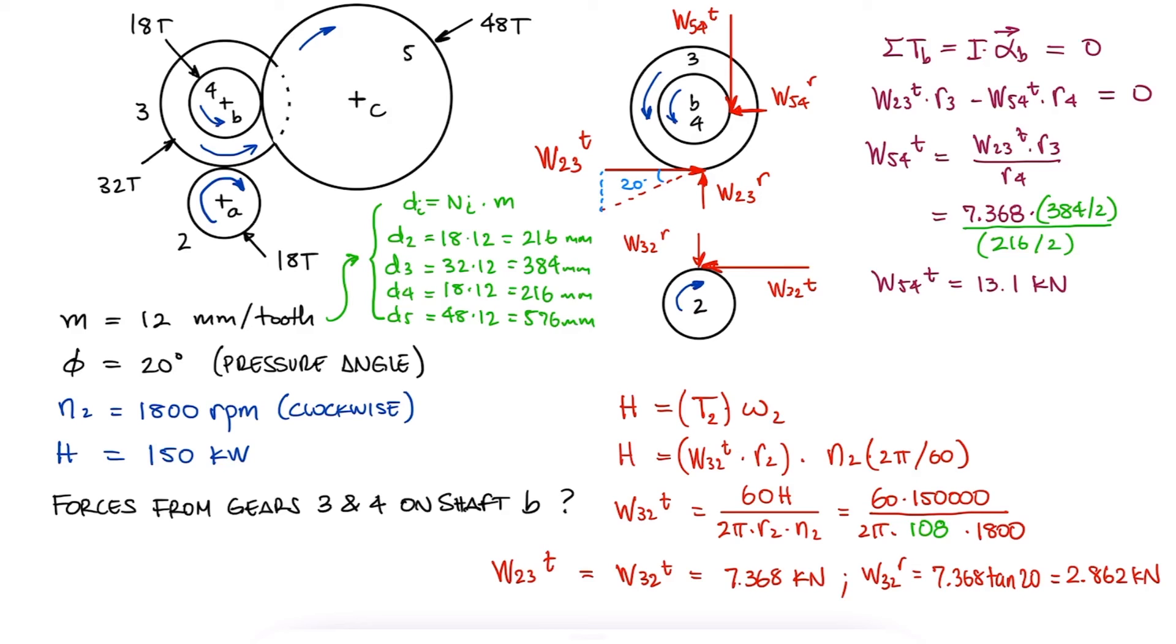Just like we did for W32, the radial component would be this value times tangent of 20. These are the four forces from gears 3 and 4 that affect shaft B.